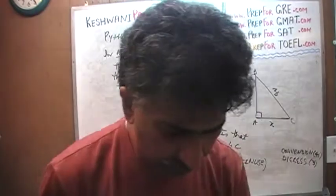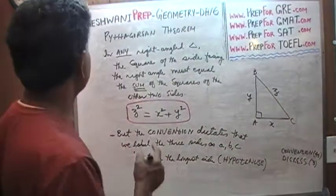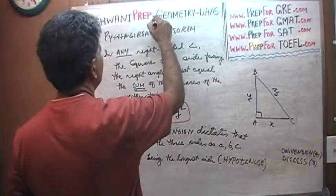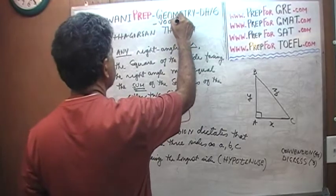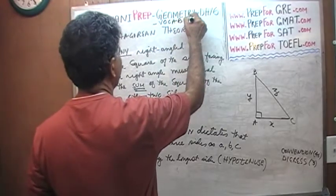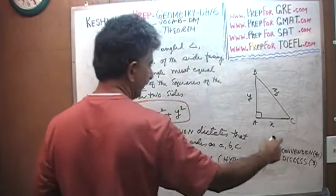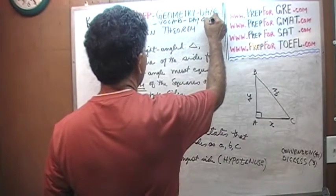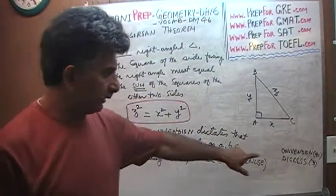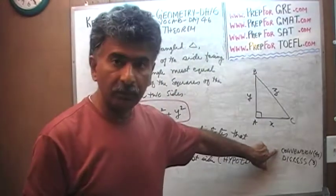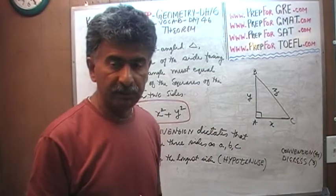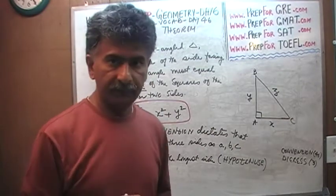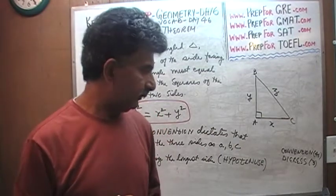If you want to learn the words 'digress' and 'convention,' just type in Keshwani Prep dash vocab dash day 46, and you will learn the word convention along with a whole bunch of other useful words for the SAT, GRE, and GMAT. It doesn't hurt to improve your vocabulary at the same time.